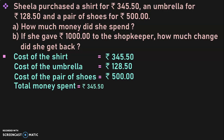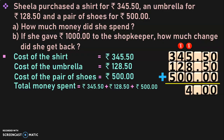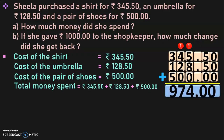So we add Rs. 345.50 plus Rs. 128.50 plus Rs. 500. Take care that the decimal points are aligned. Adding the paise part first: 0, then 5 plus 5 is 10 — write 0, carry 1. Place the decimal. Then 1 plus 5 is 6, 6 plus 8 is 14 — write 4, carry 1. 1 plus 4 is 5, 5 plus 2 is 7. Next place: 3 plus 1 is 4, 4 plus 5 is 9. The total amount spent is Rs. 974.